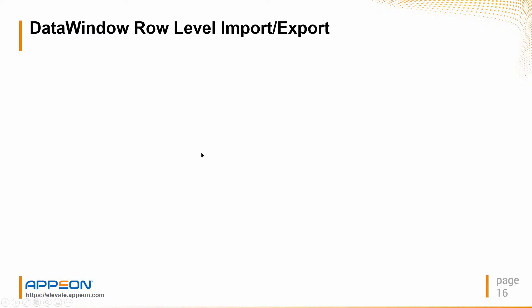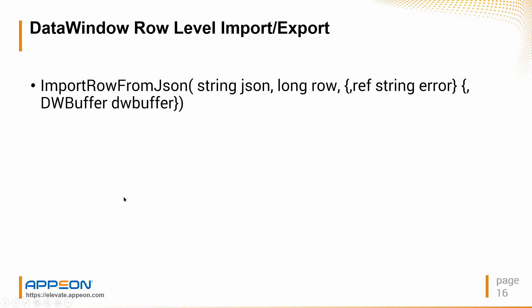It's important to know the different formats because many of the functions we're going to look at will ask you to specify what format you want the JSON in. We now have import row from JSON. Previously, if you wanted to import data into a DataWindow, you had to do it all at once — importing another JSON string would replace existing data. This new feature allows you to import a single row of JSON and indicate where you want that row placed. You pass in the JSON, indicate the target row, optionally pass a string by reference for error messages, and specify which data buffer — primary, filter, or deleted.